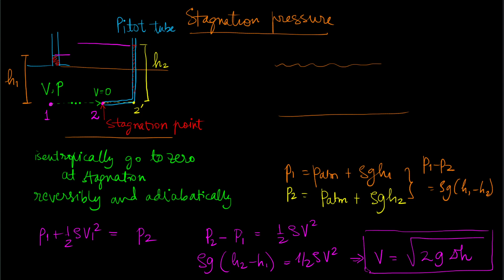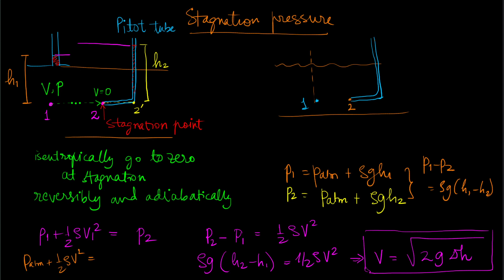This concept is even easier to apply for open channel flow. If we put a bent tube in an open channel, with point one in the flow and point two at the stagnation tip, then p1 equals p_atmosphere plus half rho v squared, and p2 equals p_atmosphere plus rho g h, directly giving the velocity from the rise height h.